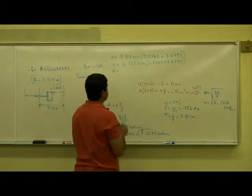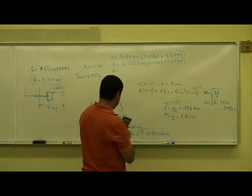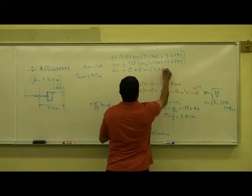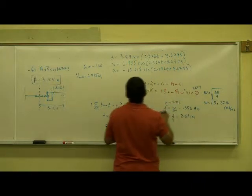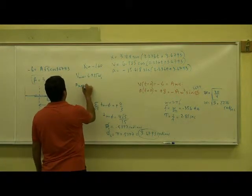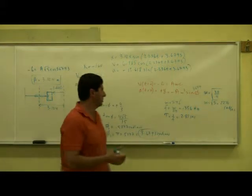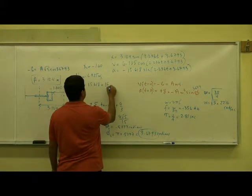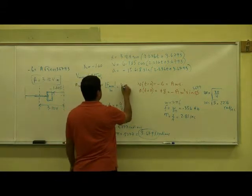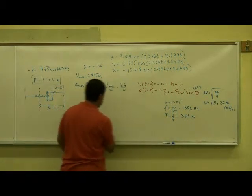Now, if you take the derivative of this again, you're going to get negative sine. So, 6.985 times 2.236, you get negative 15.618 sine of 2.236 T plus 3.6793. What does this value represent? That's the maximum acceleration. The magnitude of the maximum acceleration. Does that make sense? What should the maximum acceleration equal?